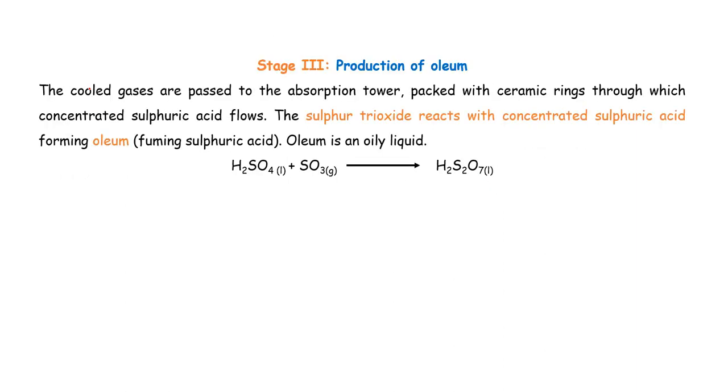Then we have stage 3, production of oleum. Now, oleum is like concentrated sulfuric acid. Once the cooled gases have been passed through the absorption tower, we tend to form oleum when we directly dissolve our sulfur trioxide in sulfuric acid. The key question is, where do we get the initial sulfuric acid? At least we are born in this age where sulfuric acid is already present, so that isn't a challenge. You already have it.